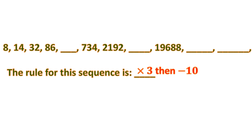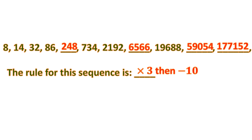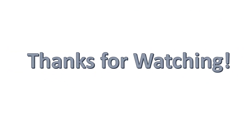Now we fill in the blanks. 86 times 3 minus 10 gives 248. Then 192 times 3 minus 10 gives 566. Using 19,688 times 3 minus 10 gives 59,054. Then 59,054 times 3 minus 10 gives 177,152. That's the pattern for this problem. Thanks for watching — I hope you learned from this video. Please support my channel by subscribing and write the math topics you want to learn in the comments.